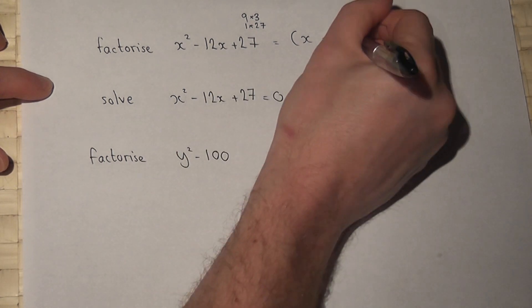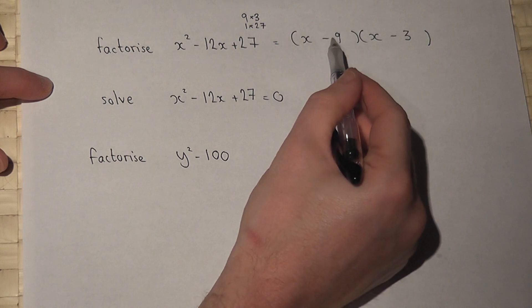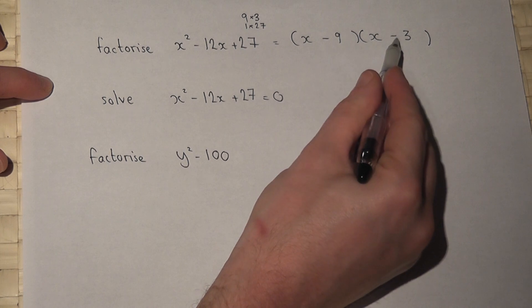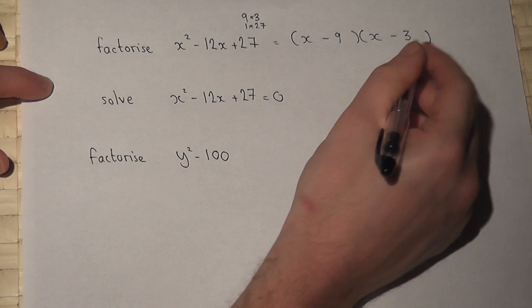Then -9 × -3 = +27, and -9 - 3 = -12, so this is the factorized form of the given expression.